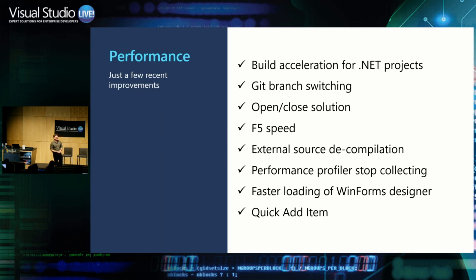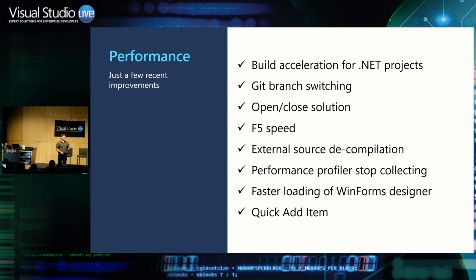Not everything is about Visual Studio being faster — sometimes it's about adding a feature that makes you do things faster. One of those is Quick Add Item. When you add a new file, most people go into Add New Item, find the class template, give it a name, and click Enter. Quick Add Item gives you a way to just type 'foo.cs' — it knows that .cs is C#, and it's foo so that's probably a class, so it gives you the class template. Once you've done this, there's no way back. It might not seem important, but once you use it, you will never go back. It has that kind of stickiness.